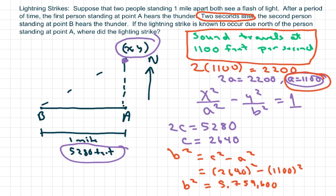I'm going to write the equation on the other page, and then we've got to find our Y. So basically, our equation is X squared over 1100 squared, because that's your A, minus Y squared over your B squared. We didn't take the square root of B, so we're just going to write 5,759,600 equals 1.